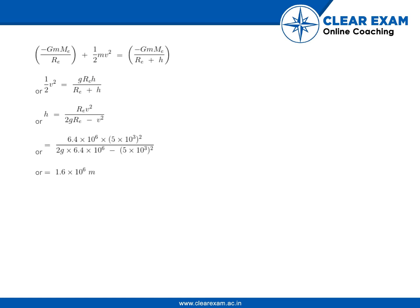So ½v² = GRₑh/(Rₑ + h). Therefore, h = Rₑv²/(2GRₑ - v²). Substituting the values into this formula...